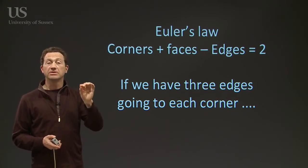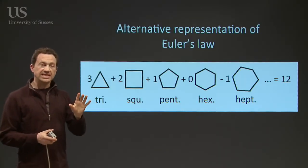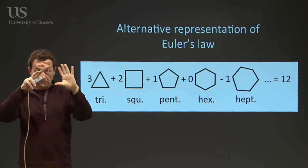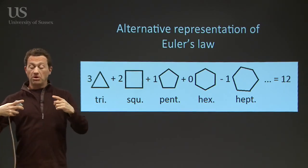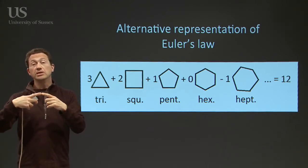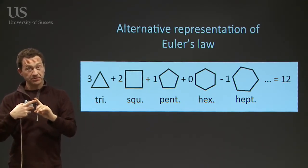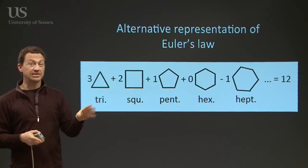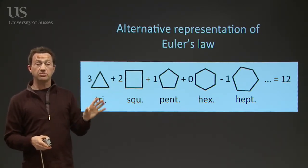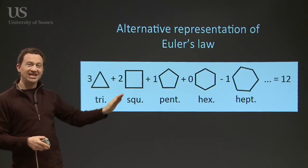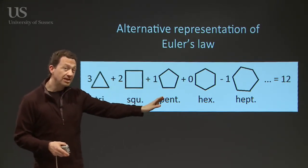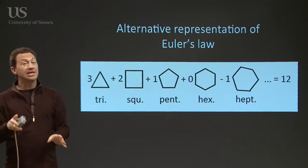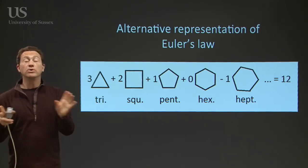We can also re-express Euler's law not just in terms of corners, faces, and edges, but just in terms of the type of corners. It turns out that in a lot of cases in nature — not just in the fullerenes, but in soap bubbles or animal skeletons — you often have three edges coming to one point, not four. So if you apply that constraint to Euler's law and go through the maths, you get a different but useful expression: three times the number of triangles, plus two times the number of squares, plus one times the number of pentagons, minus naught times the number of hexagons, minus one times the number of heptagons, minus two times the number of octagons, and so on — always equals twelve.